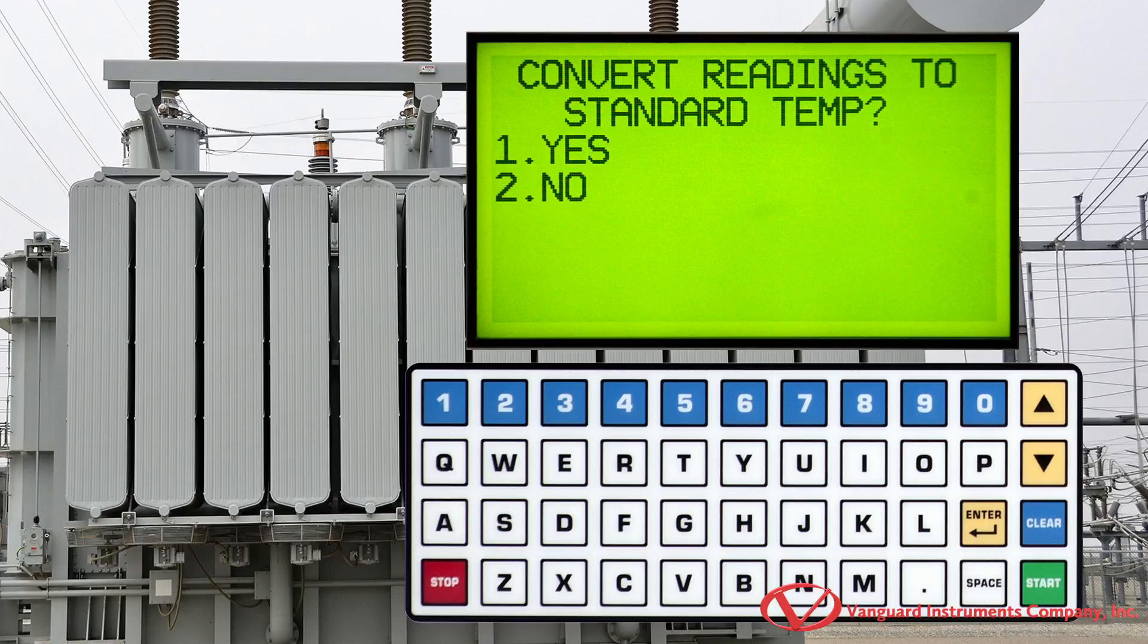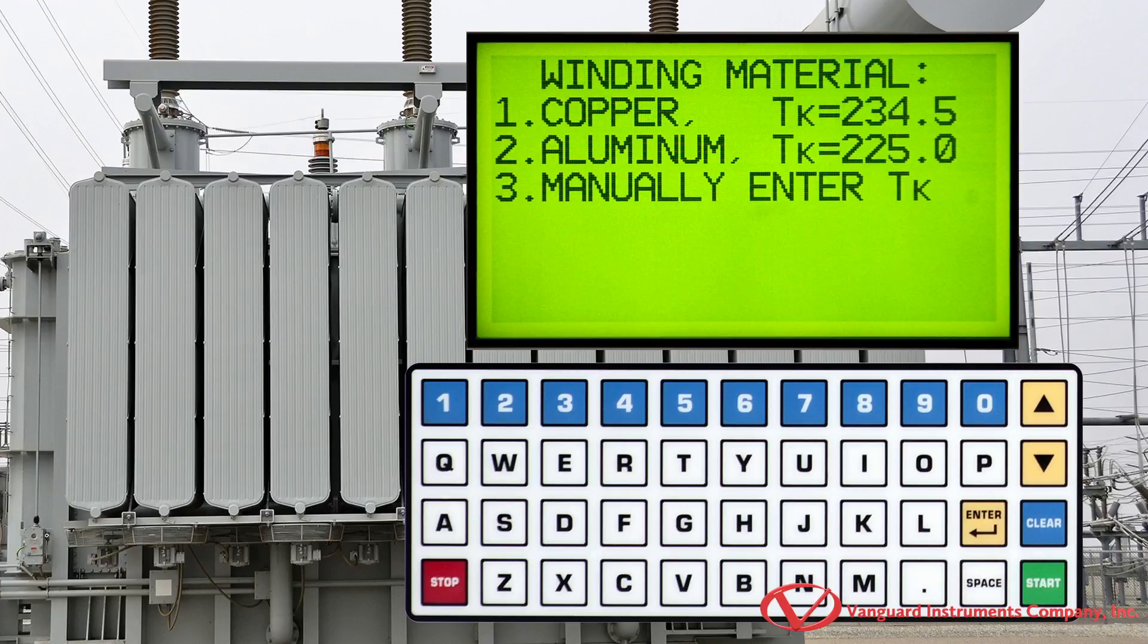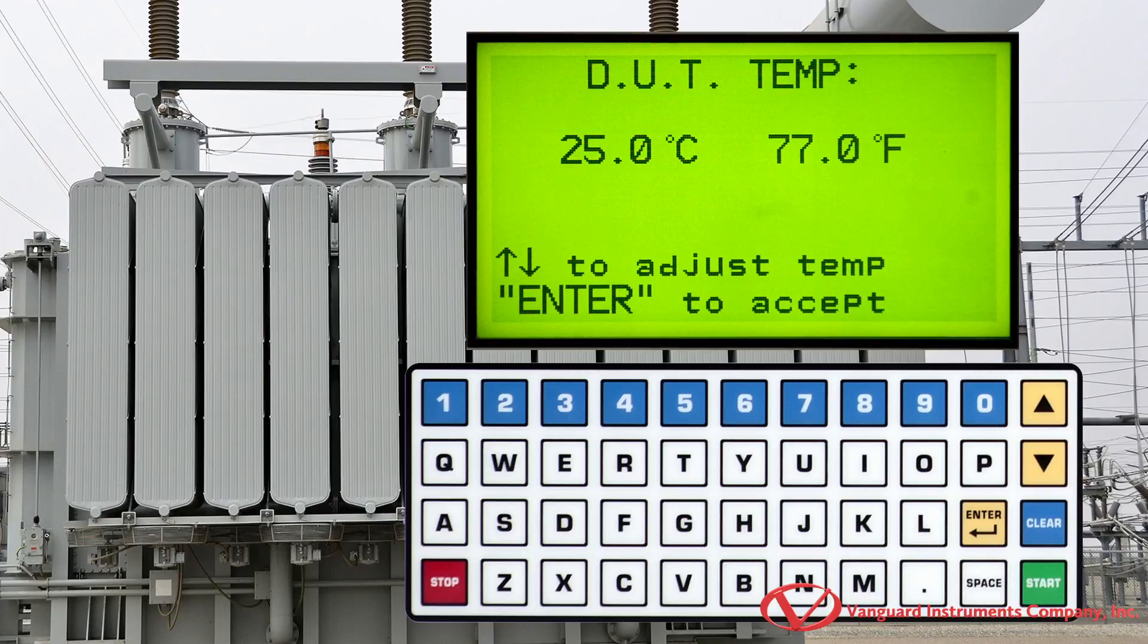We are now given the option to convert our readings to standard temperature. You can select this option if you know the winding material's temperature constant value. Let's press the 1 key to select yes. From this menu you can select the provided values for copper and aluminum windings, or manually enter the constant value by pressing the 3 key. We'll press the 1 key for copper since our transformer uses copper windings.